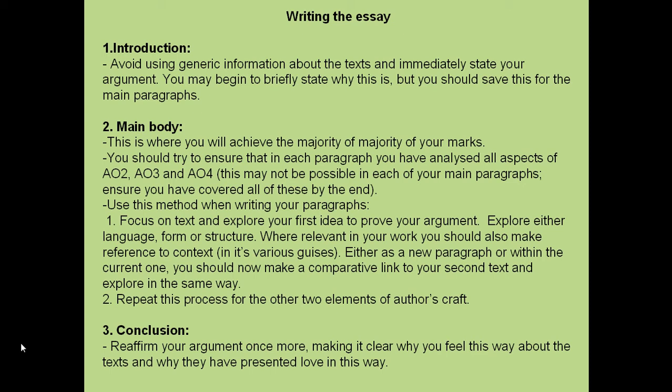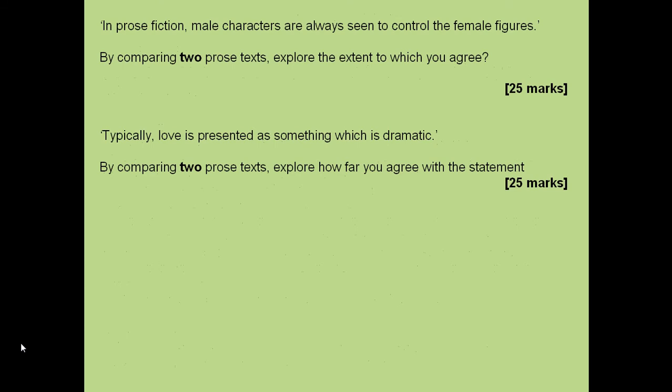So this is how I'd write the essay — it's very much like your main essay. My introduction obviously needs to cover my argument and I need to briefly begin to explain why. My main body is again where I'll achieve the majority of my marks. I should start off with the first text, exploring my first point: form, structure, language, and how that proves I'm correct, including context and alternative viewpoints. Then I think about my second text and repeat the same style, making sure I'm writing why or how it is similar. My conclusion is to reaffirm my argument once more, making it clear why I feel this way and why the writers would have written the text in the way that they have.